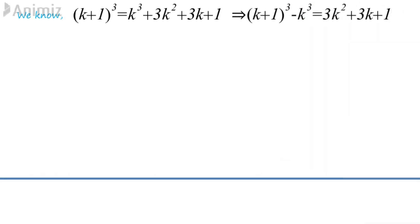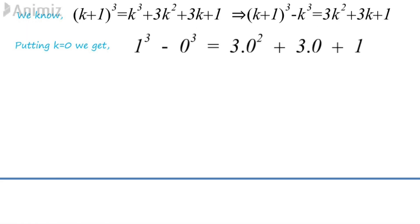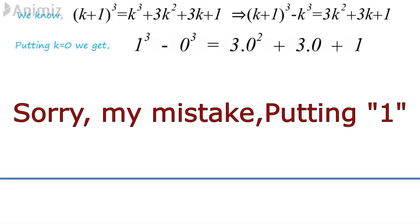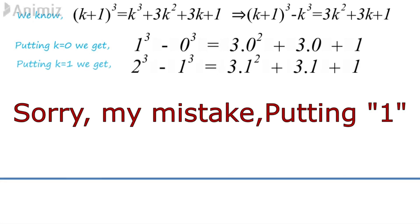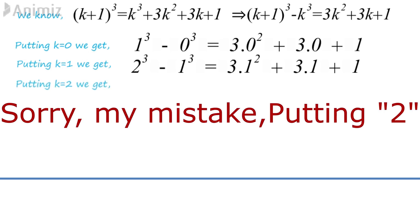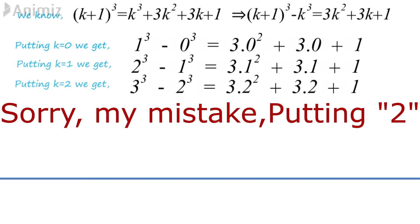Now, in this form, putting K equals to 0, we get 1 cube minus 0 cube equals to 3 multiplied by 0 square plus 3 multiplied by 0 plus 1. Putting K equals to 2, we get 2 cube minus 1 cube equals to 3 multiplied by 1 square plus 3 multiplied by 1 plus 1. Then putting K equals to 3, we get 3 cube minus 2 cube equals to 3 into 2 square plus 3 into 2 plus 1.